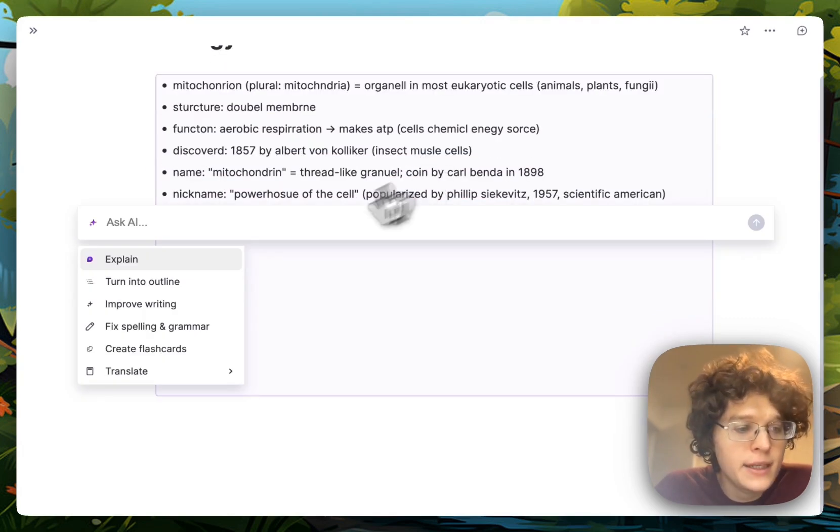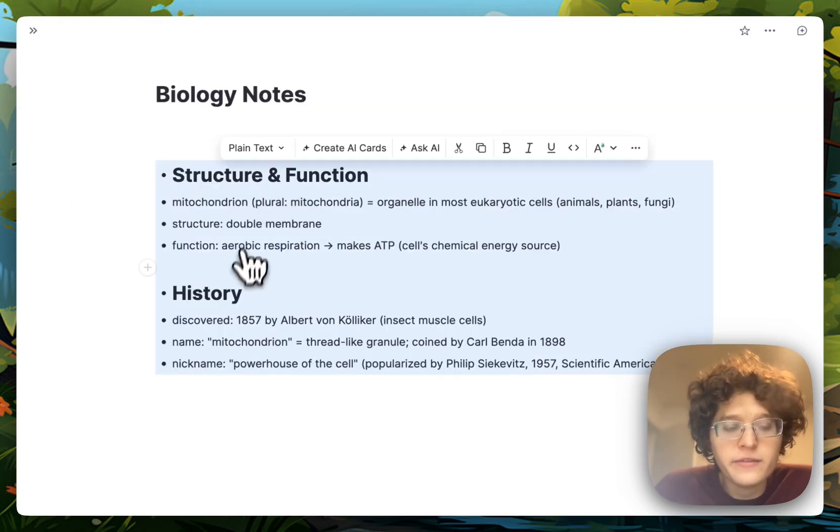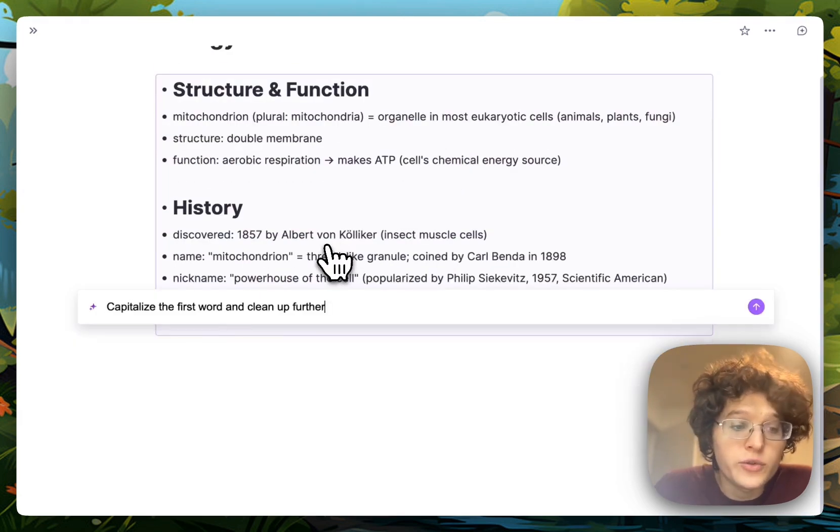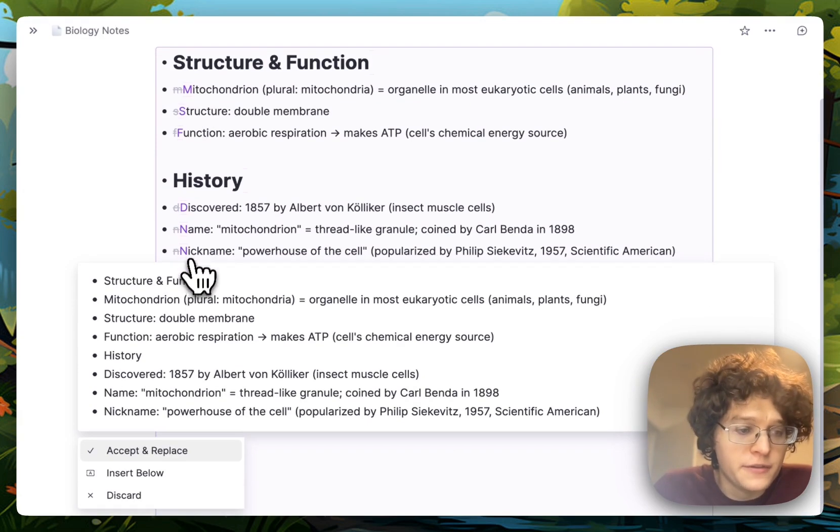I can now just go to Ask AI and click Turn Into Outline, and we can see that I immediately get a much tidier version of my document. Here, maybe I also want some of these to be capitalized, so I can simply ask it by just writing here to capitalize the first word and clean it up further, and we can see that we get an in-place edit of, in this case, just the first word of each sentence.